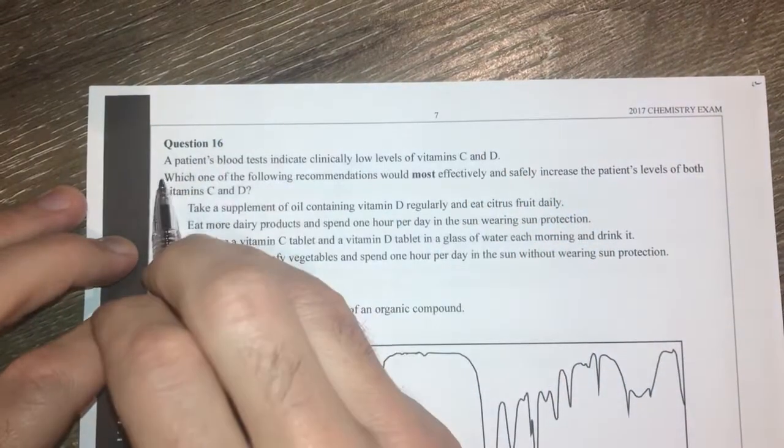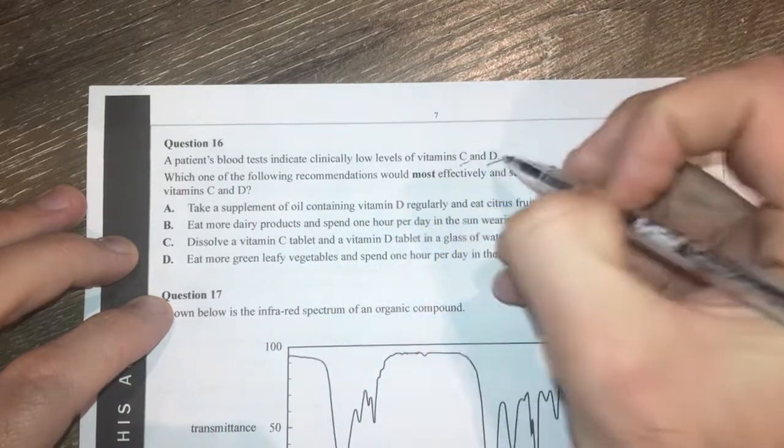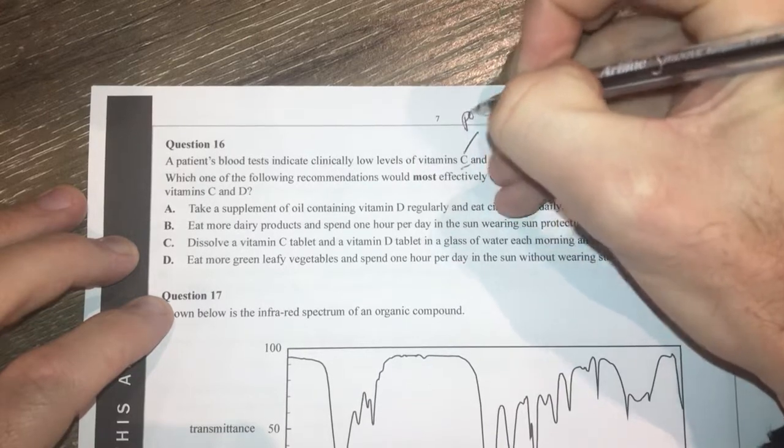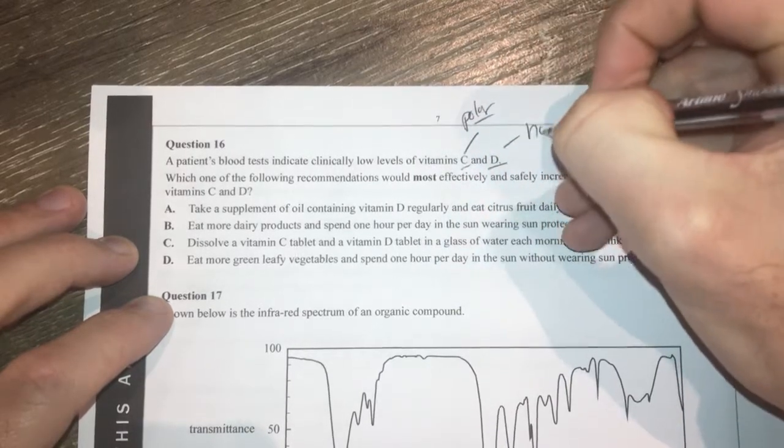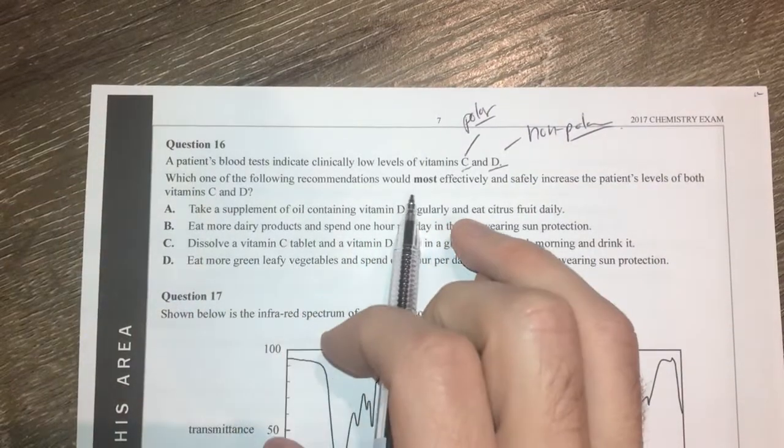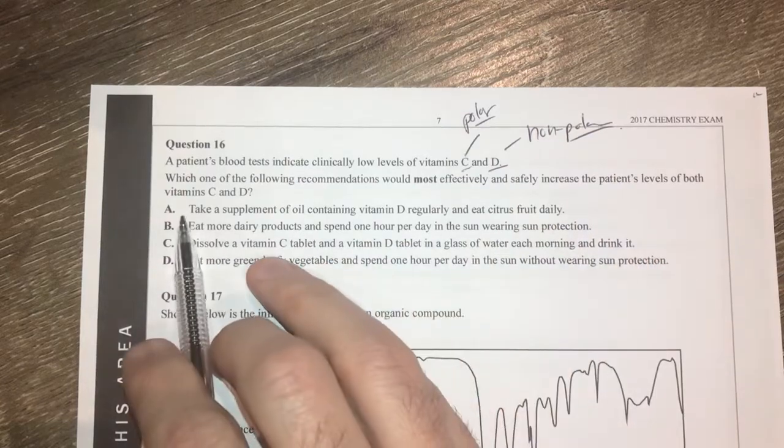Question 16. A patient's blood test indicate clinically low levels of vitamin C and D. First of all, vitamin C is polar and vitamin D is non-polar. Which of the following recommendations would most effectively and safely increase a patient's blood levels of both of these vitamins?